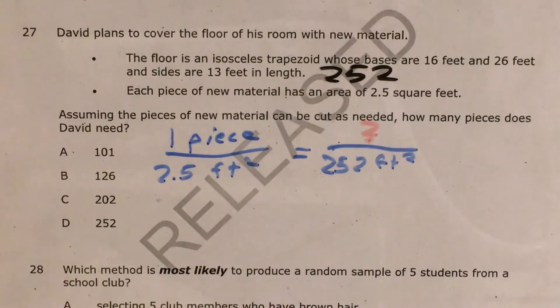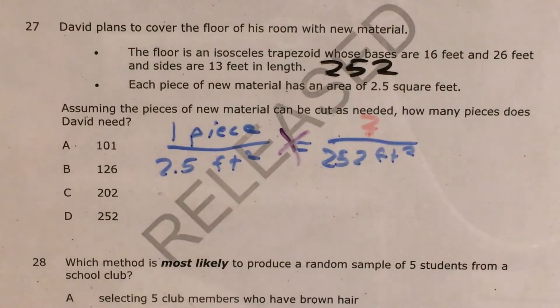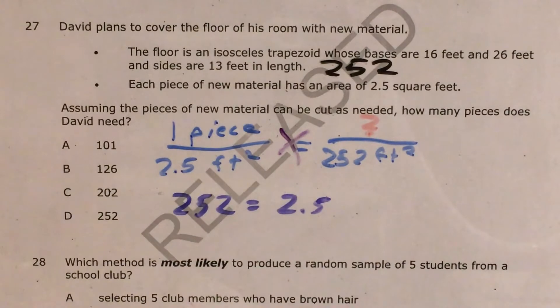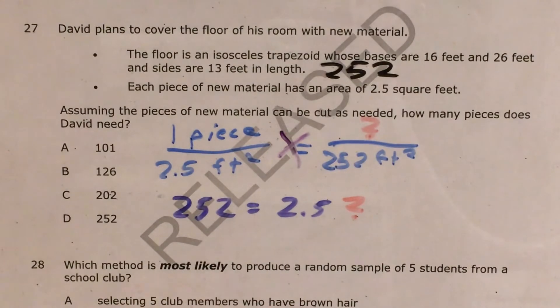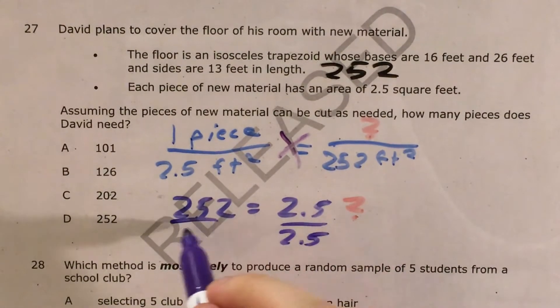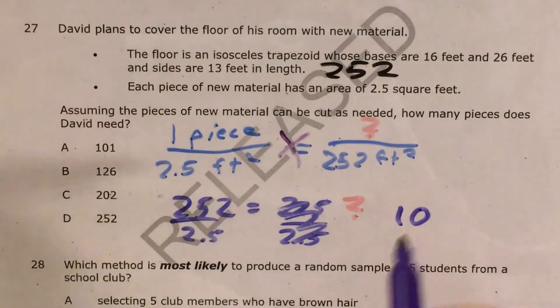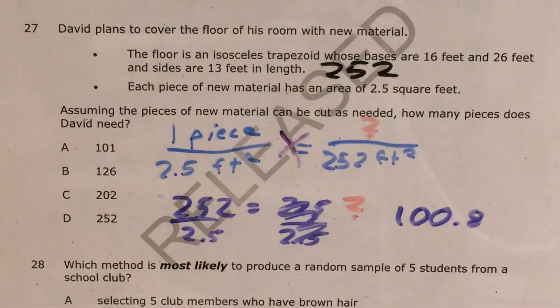Alright, so now I can use the age-old trick for solving proportions and I can cross multiply. This would get me 1 times 252, which is 252 equals 2.5 times my number of pieces that I don't know yet. And if I treat this like a one-step equation, I'll divide by 2.5, divide by 2.5. And this should get me about 100.8. I think that's exactly right, but let me try it in my calculator just to be sure. Divide it by 2.5. Okay, good. I got 100.8.